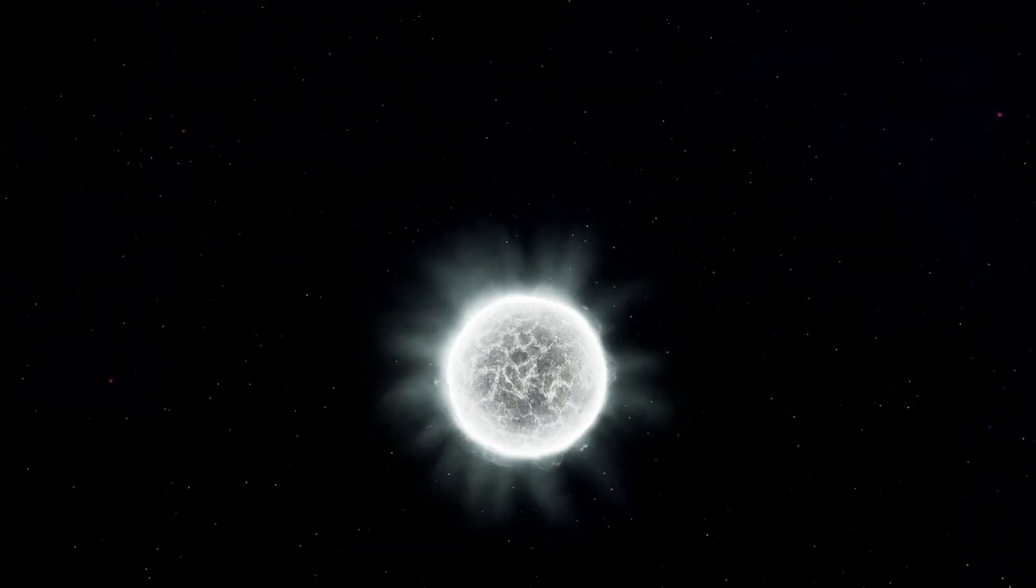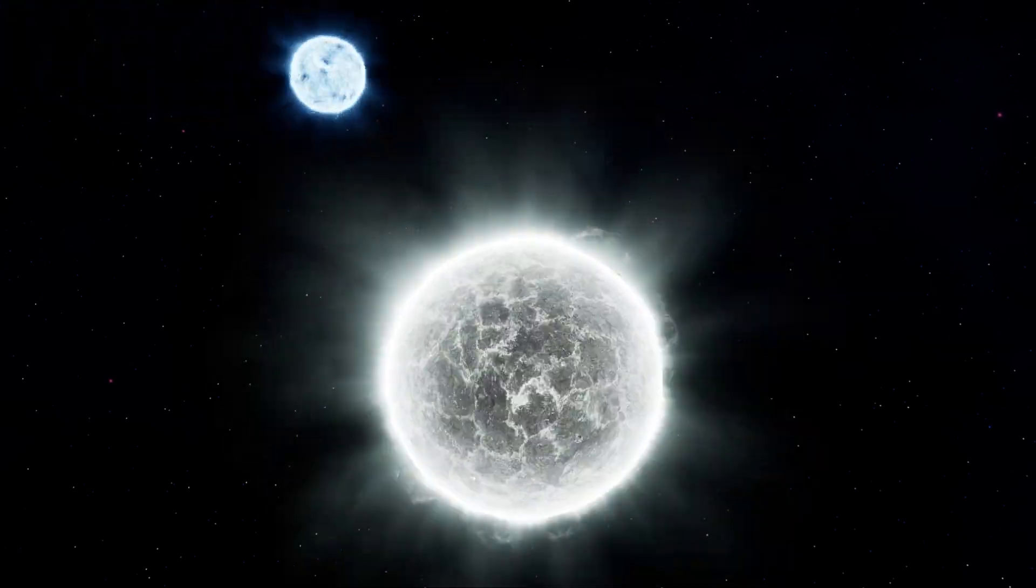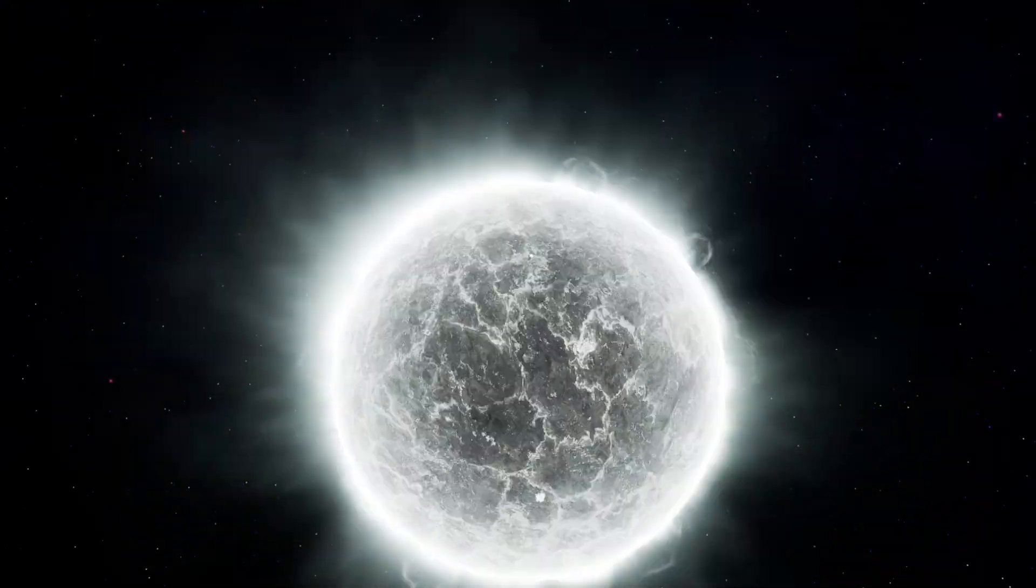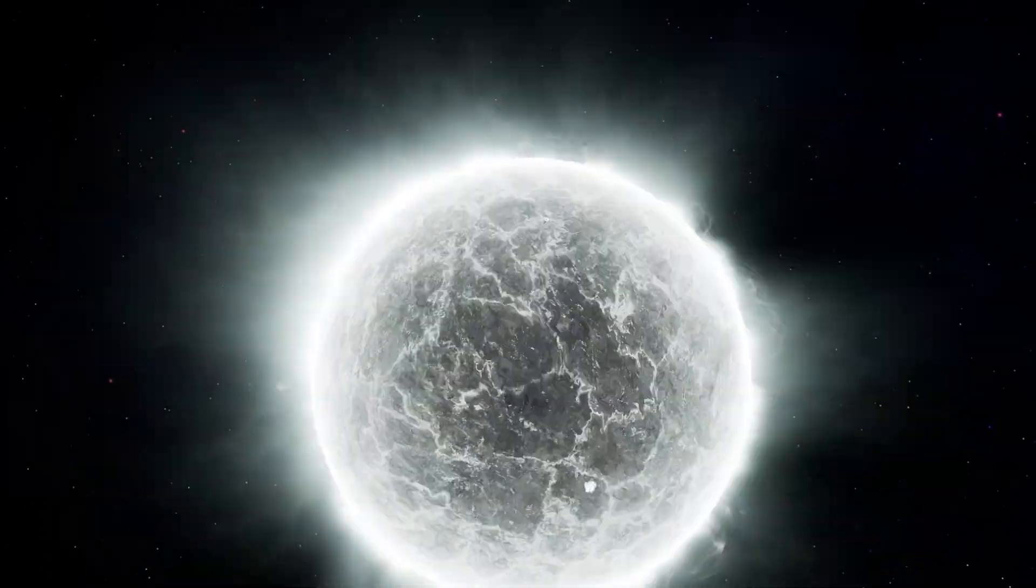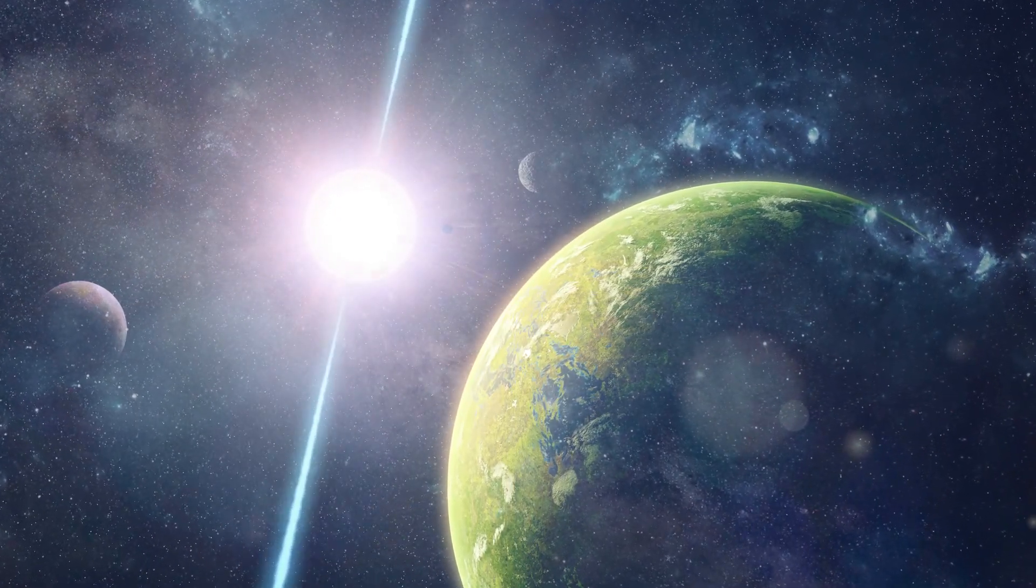The periods of pulsars make them very useful tools for astronomers. Observations of a pulsar in a binary neutron star system were used to indirectly confirm the existence of gravitational radiation. The first extrasolar planets were discovered around a pulsar.